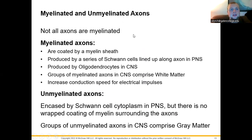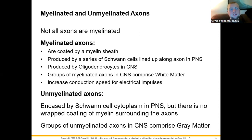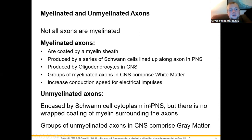Myelinated axons conduct via saltatory conduction, which greatly increases electrical impulse speed. In the peripheral nervous system, Schwann cells provide myelination; in the central nervous system, oligodendrocytes perform this role. Groups of myelinated axons form the white matter of the spinal cord and brain. Unmyelinated axons conduct much more slowly and compose the gray matter — found on the outer portion of the cerebrum and inner portion of the spinal cord.